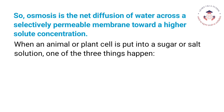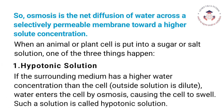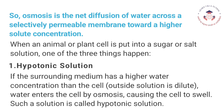When an animal or plant cell is put into a sugar or salt solution, one of three things happen. Hypotonic Solution: If the surrounding medium has a higher water concentration than the cell — meaning the outside solution is dilute — water enters the cell by osmosis, causing the cell to swell. Such a solution is called a hypotonic solution.